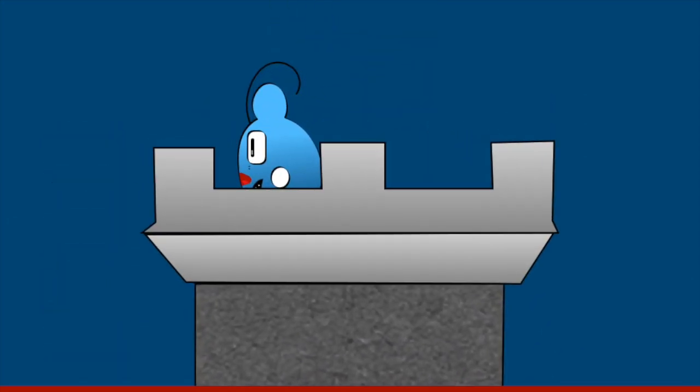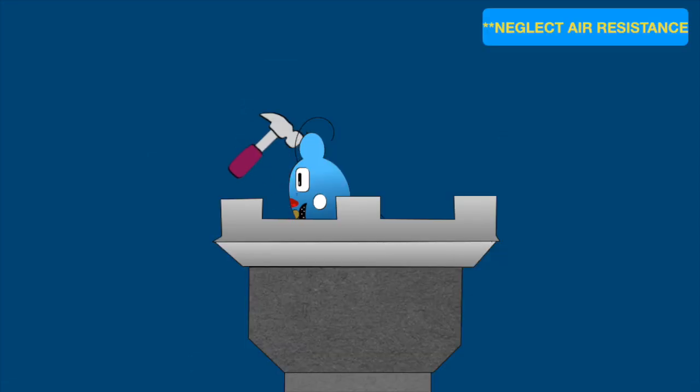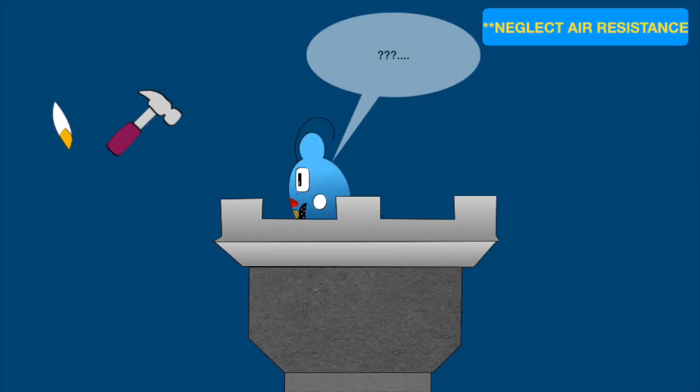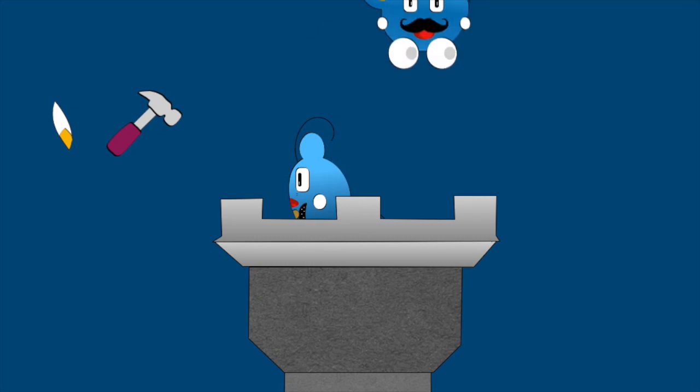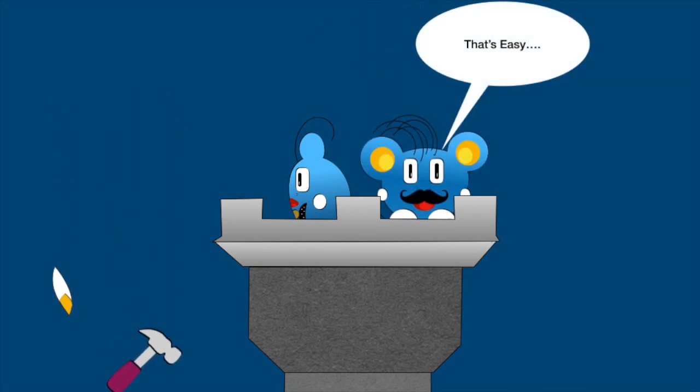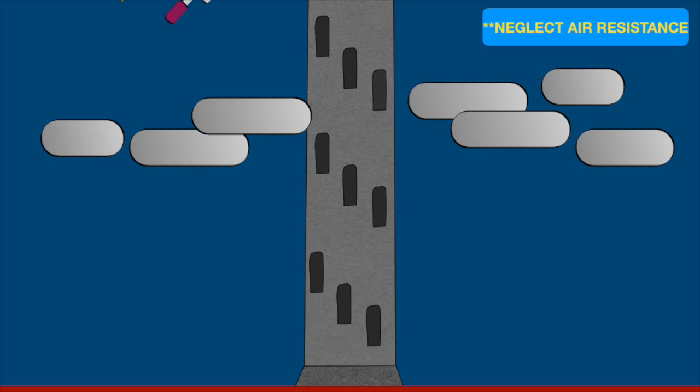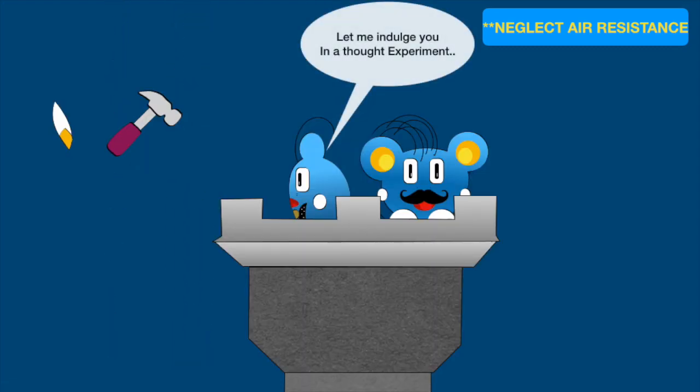What happens when you throw a heavier object and a lighter object from the top of a tall tower? Which one touches the ground first? According to the great Aristotle, it's obvious. The heavier object will hit the ground first. But Galileo said, let me indulge you in a thought experiment.